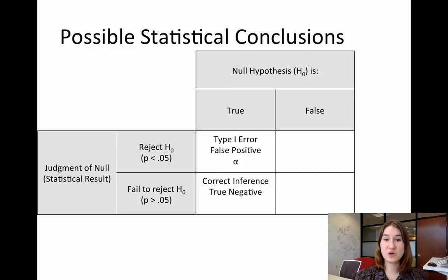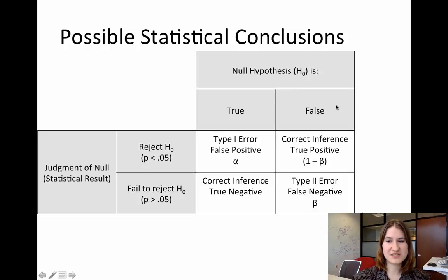Now when the null hypothesis is false, two different things can happen. If the null hypothesis is false and we reject it, this is a different type of correct inference. This is a true positive. And so when we're talking about the power of a test, we're talking about that true positive value, which is defined as 1 minus beta.